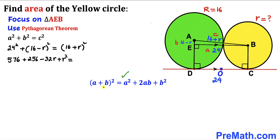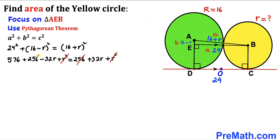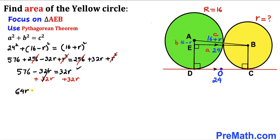Expanding the right side using (a + b)² = a² + 2ab + b²: 576 + 256 − 32r + r² = 256 + 32r + r². The r² terms cancel and the 256 terms cancel, leaving 576 − 32r = 32r. Adding 32r to both sides: 576 = 64r. Dividing both sides by 64, r = 9 cm. The radius of the yellow circle is 9 cm.